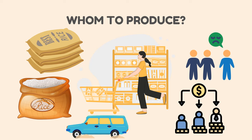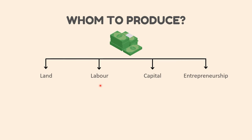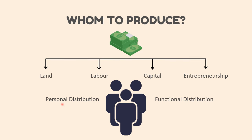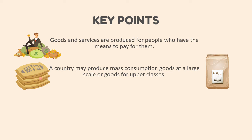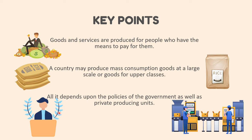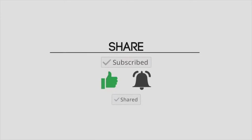Luxury goods and services are for people with high income. The distribution of final goods and services is equal to the distribution of income among the factors of production: land, labor, capital, and entrepreneurship. This has two aspects — personal distribution, which refers to the distribution of income among different groups of individuals in society, and functional distribution, which refers to the distribution of income among different factors of production. The key points are: goods and services are produced for people who have the means to pay for them; a country may produce mass consumption goods at a large scale or goods for upper classes, and all this depends upon the policies of the government as well as private producing units.